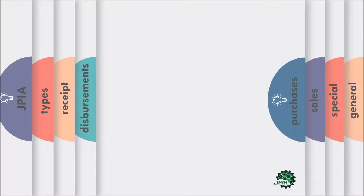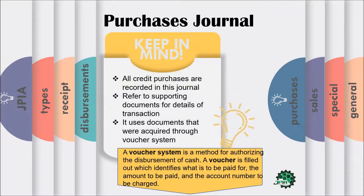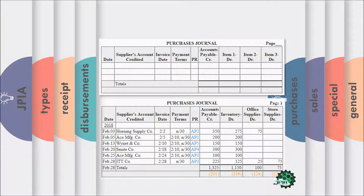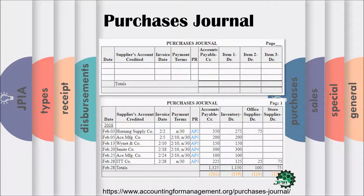For the purchases journal, keep in mind that all credit purchases are recorded in this journal. Refer to supporting documents for details of the transaction. It uses documents that were acquired through the voucher system. The voucher system is a method for authorizing the disbursement of cash. A voucher is filled out which identifies what is to be paid for, the amount to be paid, and the account number to be charged. In this slide, you'll see an example of a purchases journal — same structure as the sales journal, but with different account titles.